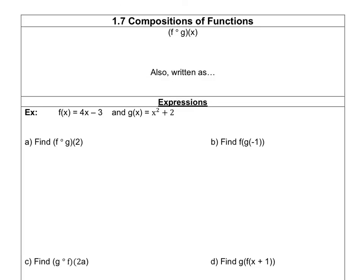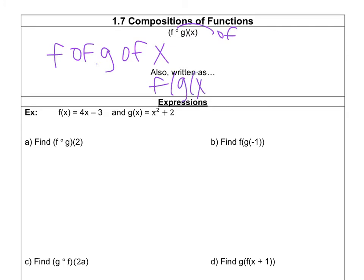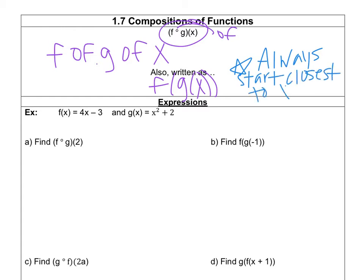So this is how we write compositions of functions and this is the notation for it. This is pronounced as f of g of x — that's what this little symbol means, 'of.' It can also be written as f of g of x with just parentheses: f, parentheses, g, parentheses, x, and then double parentheses. Something to keep in mind is that you always start closest to x, or whatever your input is.